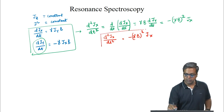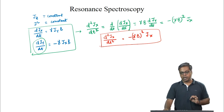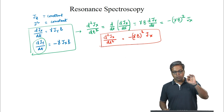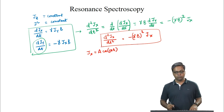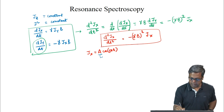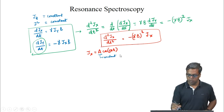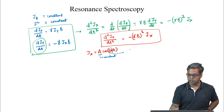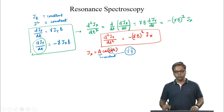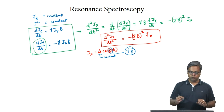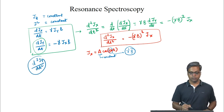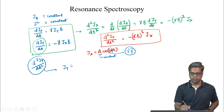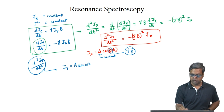This is a differential equation, and one solution to this differential equation is Jx = A cos(ωt), where A is a constant and ω = γB. Similarly, looking at d²Jy/dt², we can get Jy = A sin(ωt).